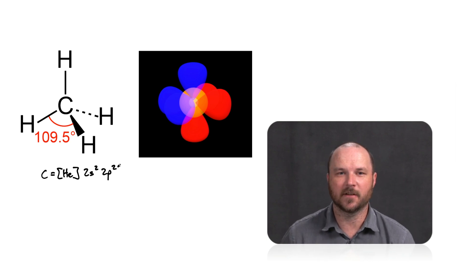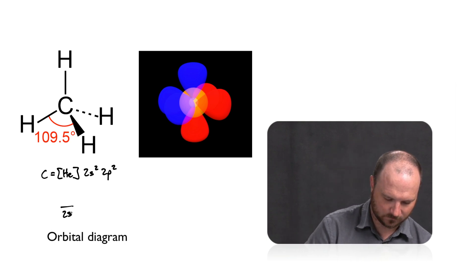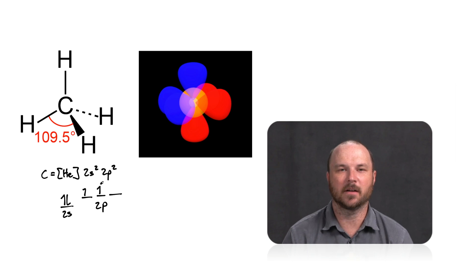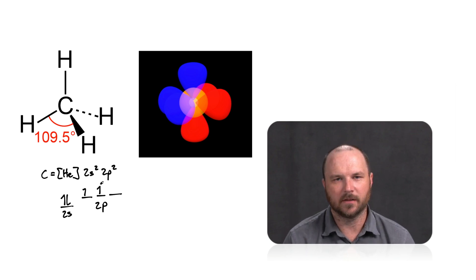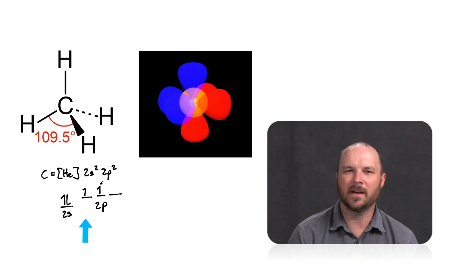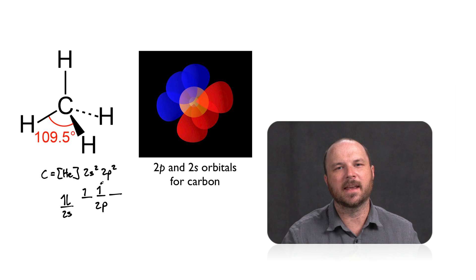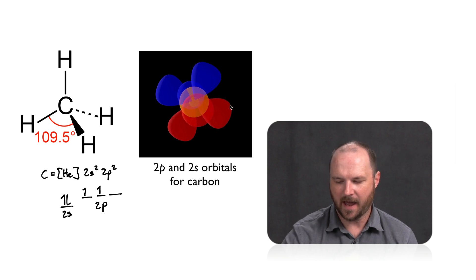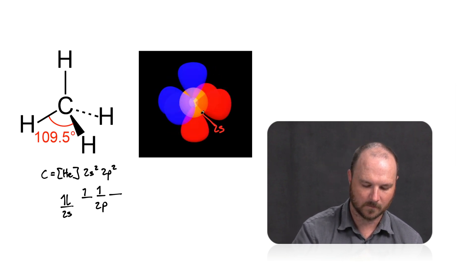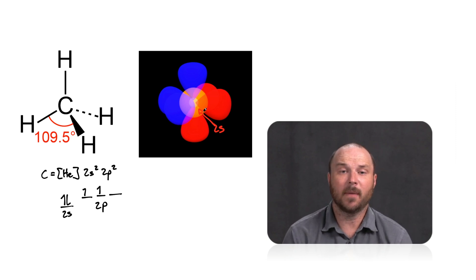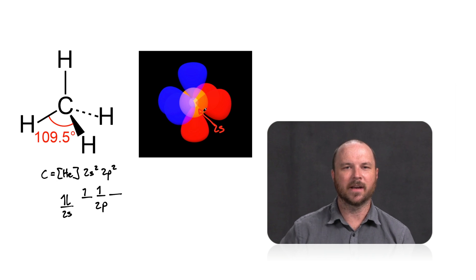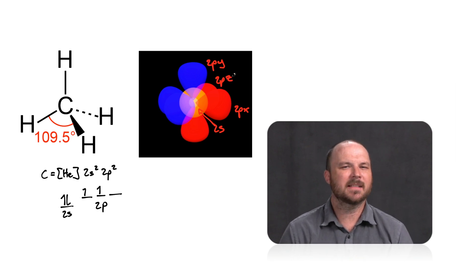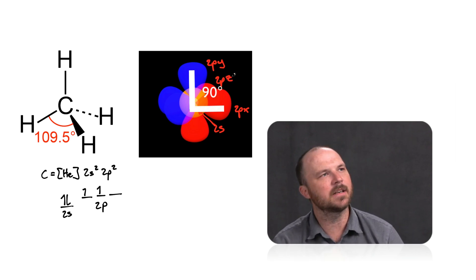If we draw out an orbital diagram for this, it would look like this. Those are the electrons that are part of carbon on its valence level. We have that s orbital that's fully filled, and then we have two electrons, one each, in 2p orbitals. The 2p and the 2s orbitals surrounding carbon — the 2s has a spherical shape, and then all of the 2p orbitals have that parabolic shape, going in the x, y, and z directions. That makes things kind of weird because they're all 90 degrees away from each other. So how do we get that tetrahedral shape?